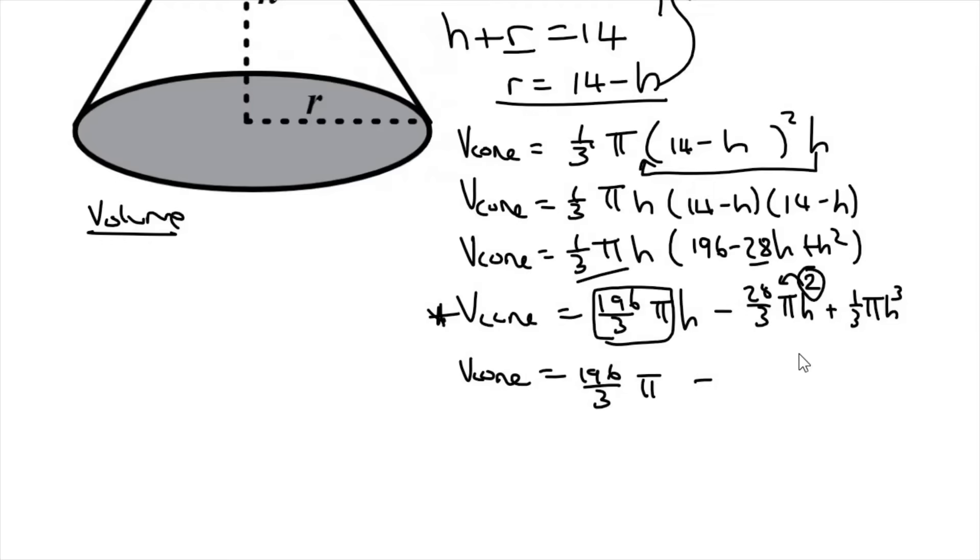Let the calculator do all the difficult stuff. And that's just going to give you 56 over three pi h. There'll still be an h left over. And then this will just be three multiplied by a third pi, which is just going to give you pi. And then there'll still be an h squared.